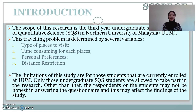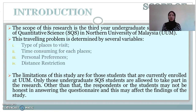Our scope of study is third-year undergraduate students of the Quantitative Science program at UUM. This travelling problem is determined by several variables: type of place, time consumed for each place, personal preference, and distance restriction. The limitation for this study is that it applies only to students currently enrolled at UUM, and only undergraduate students are allowed to take part. Additionally, respondents may not be honest in answering the questions, which may affect the findings of the study.